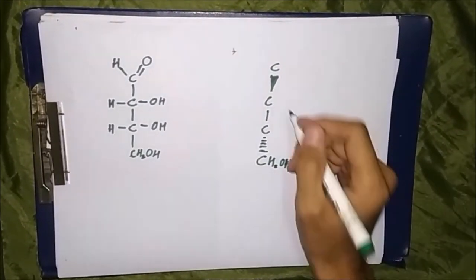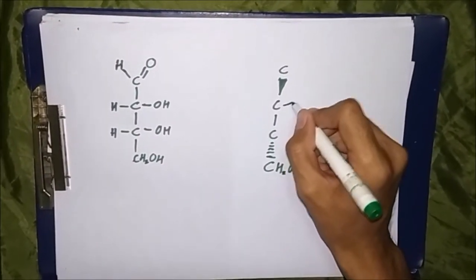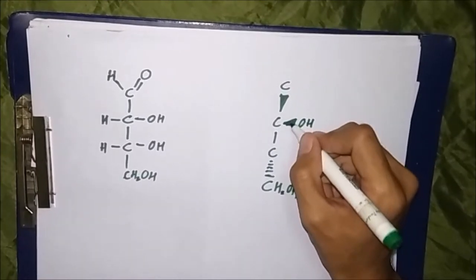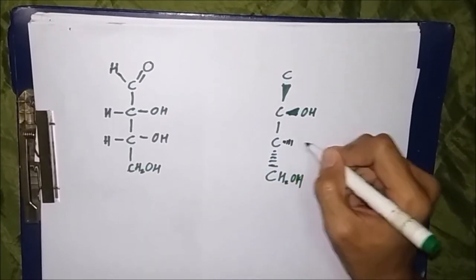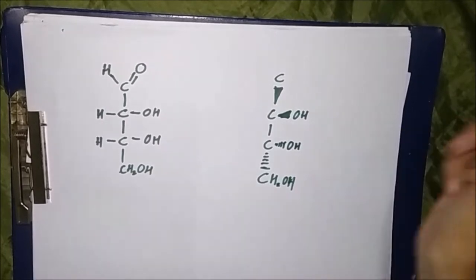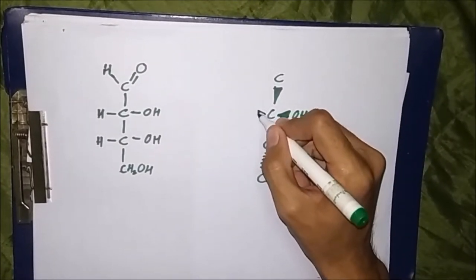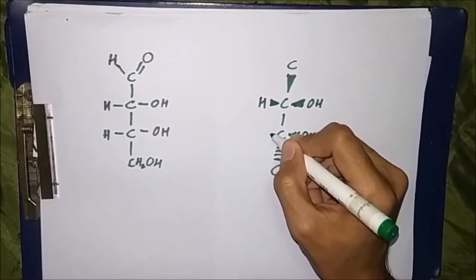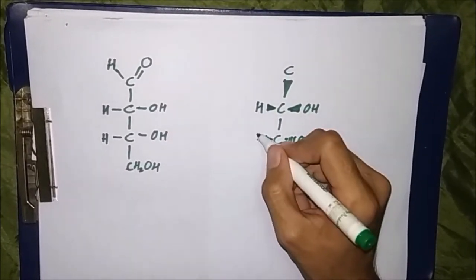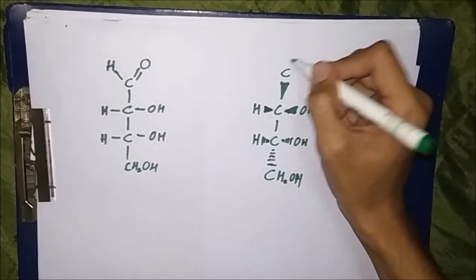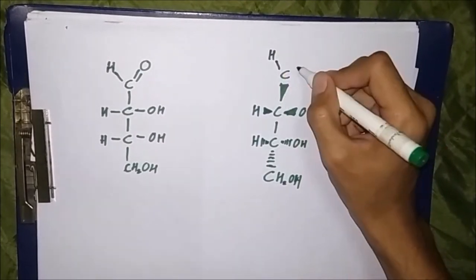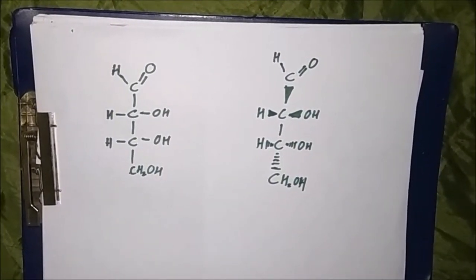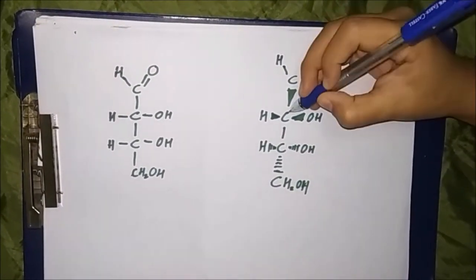This is a projection of a tetrahedral molecule floating in air onto a planar surface. These bold marks show that the elements go above the planar surface, while these lines here go into the planar surface.